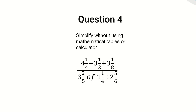Now let's consider the question for this video. We should simplify without using mathematical tables or a calculator the expression with the numerator: four and one-quarter minus three and one-half plus three and one-eighth, divided by the denominator: three and two-fifths of one and one-quarter divided by two and five-sixths. Ensure you don't use your calculator — we are doing this without one.